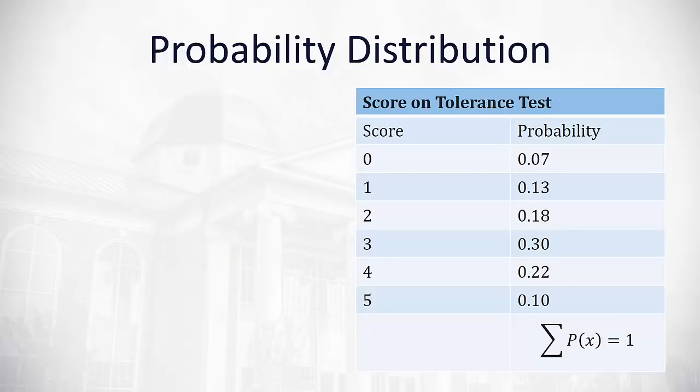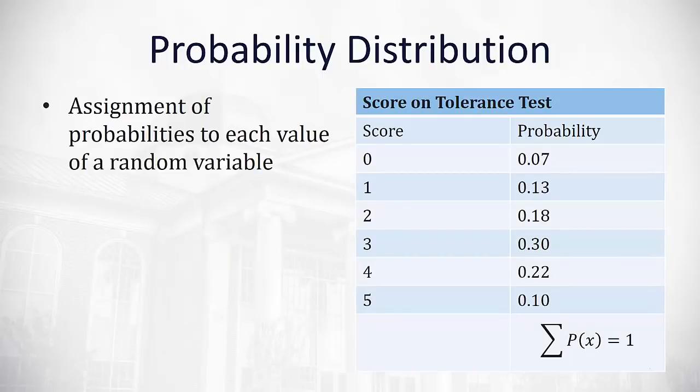With that in mind, let's define what a probability distribution is. A probability distribution will assign probabilities to each value on a random variable.